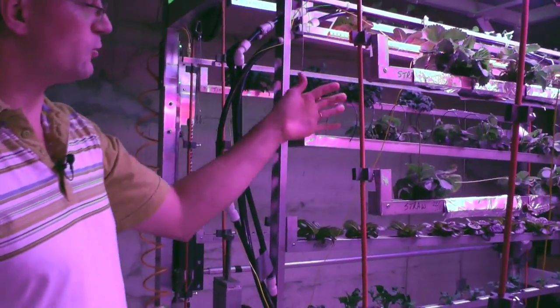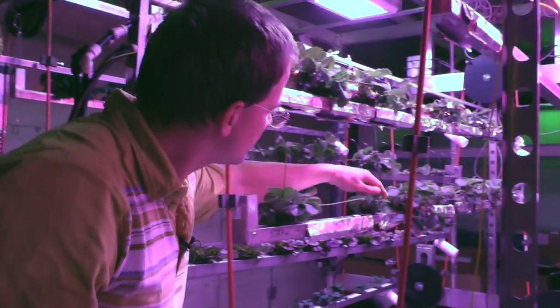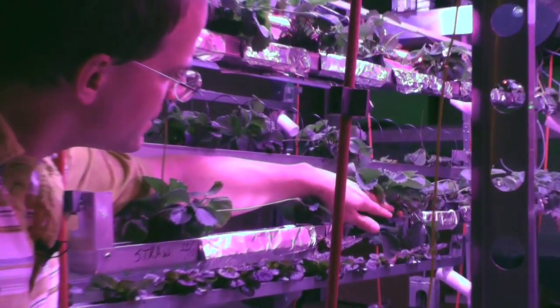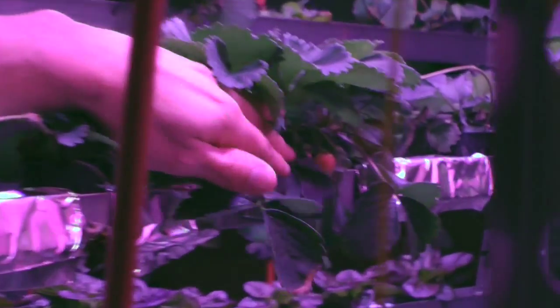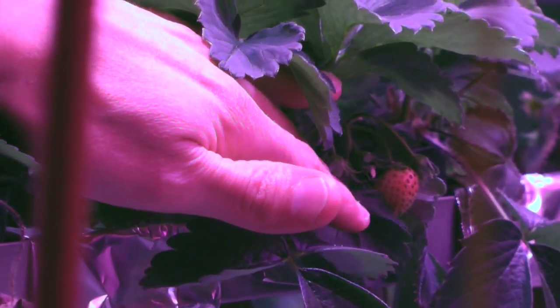Different strawberries are actually growing on the system and we've had some flowers and some fruit. If you zoom in here, you can actually see a little fruit that's starting to form right there. It's actually starting to turn red. Tomorrow we'll probably be able to eat it.